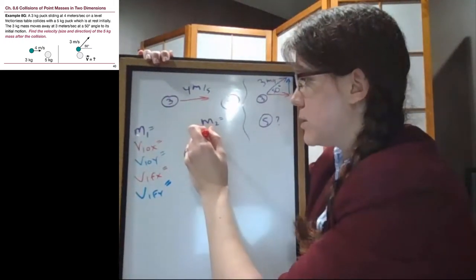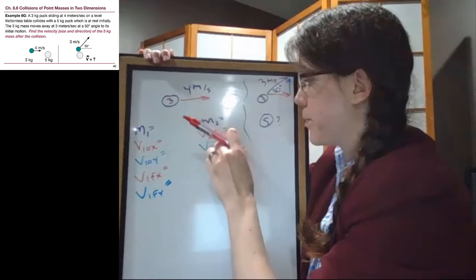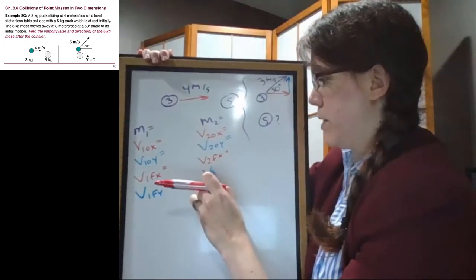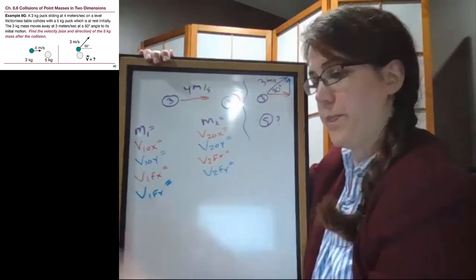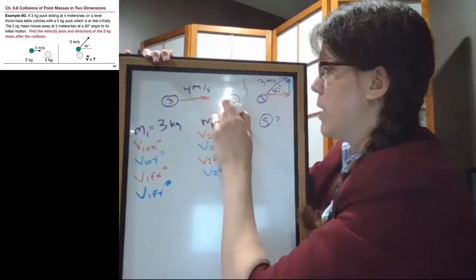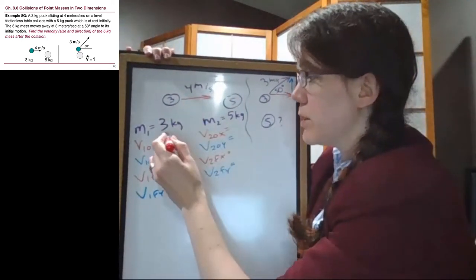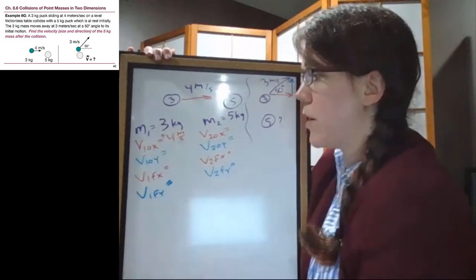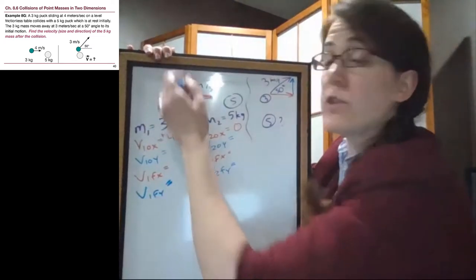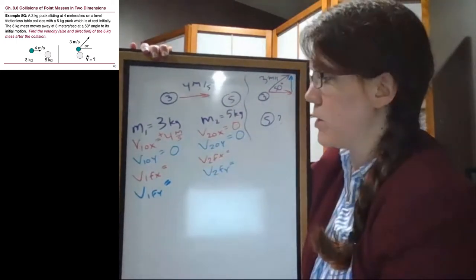It's worth making this list so we can fill in the information we have and know what information we're solving for. This will be our mass one, the three kilogram block, and this will be our mass two, five kilograms. For the initial velocity in the x direction, this is four meters per second to the right, so we'll call that positive. For this one, it's not moving, so that's zero. For the initial y direction, there is no up and down component of an arrow that points directly sideways, so this is zero, and that one, since it's still not moving, is also zero.